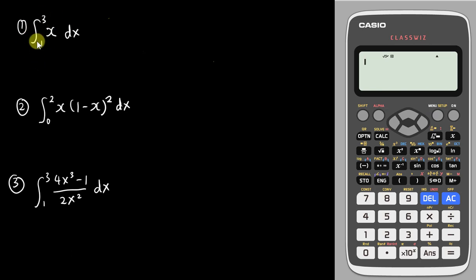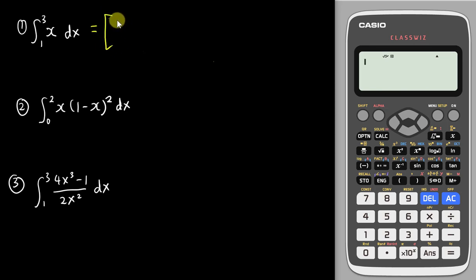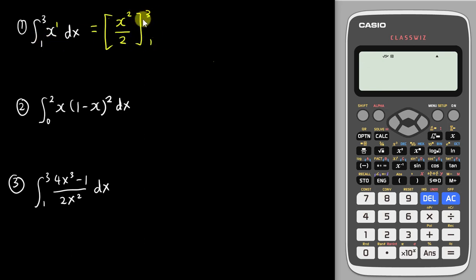The first question asks us to integrate x from 1 to 3, dx. If you do this manually, the integration law tells us the power will always be plus one — so power one becomes power two — then divided by the total power, which is two.